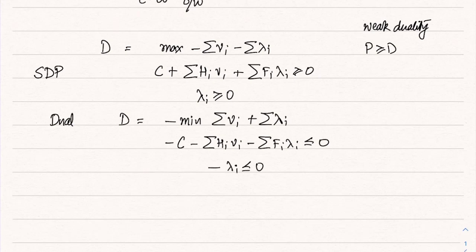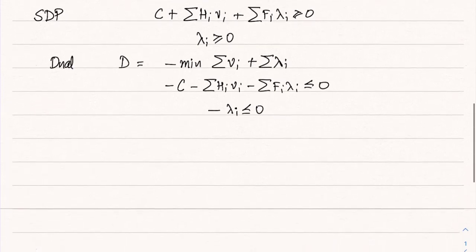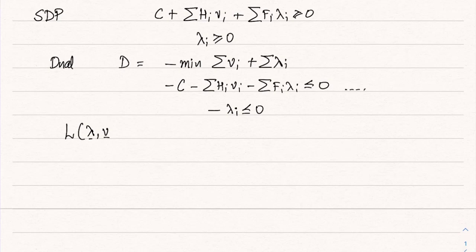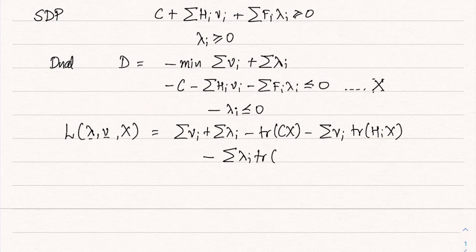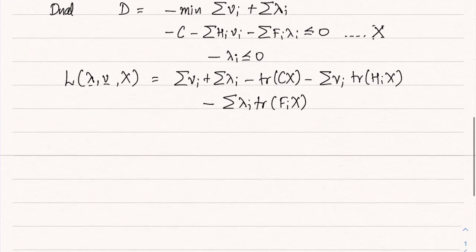We associate a dual matrix variable X (capital X) with the negative semi-definiteness constraint. The Lagrangian becomes: Σ ν_i + Σ λ_i − trace(CX) − Σ ν_i · trace(H_i X) − Σ λ_i · trace(F_i X). Now we need to minimize this Lagrangian with respect to λ and ν.